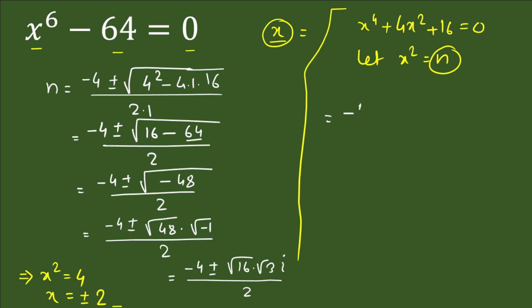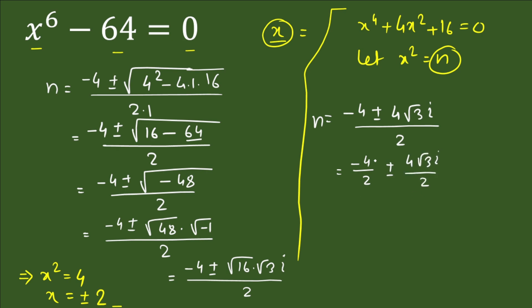Dividing through by 2: minus 4 divided by 2 gives minus 2, and 4√3·i divided by 2 gives 2√3·i. So the value of n is minus 2 ± 2√3·i.